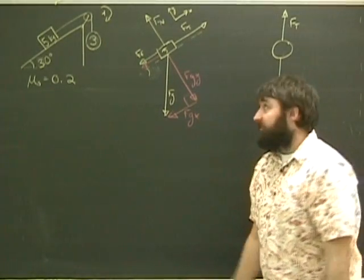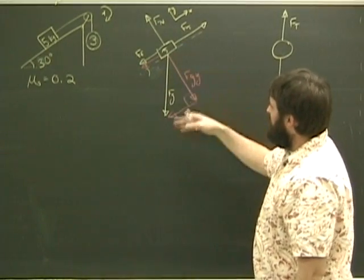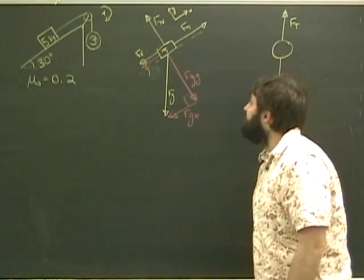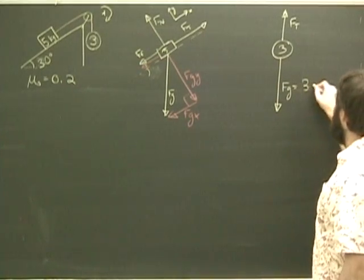Draw a free body diagram, which is exactly the same for the 5 kilogram mass. We have gravity's components x and y, we have the force of friction, the normal force and the tension. Over here the free body diagram is essentially the same as well. Fg is going to be 3g.